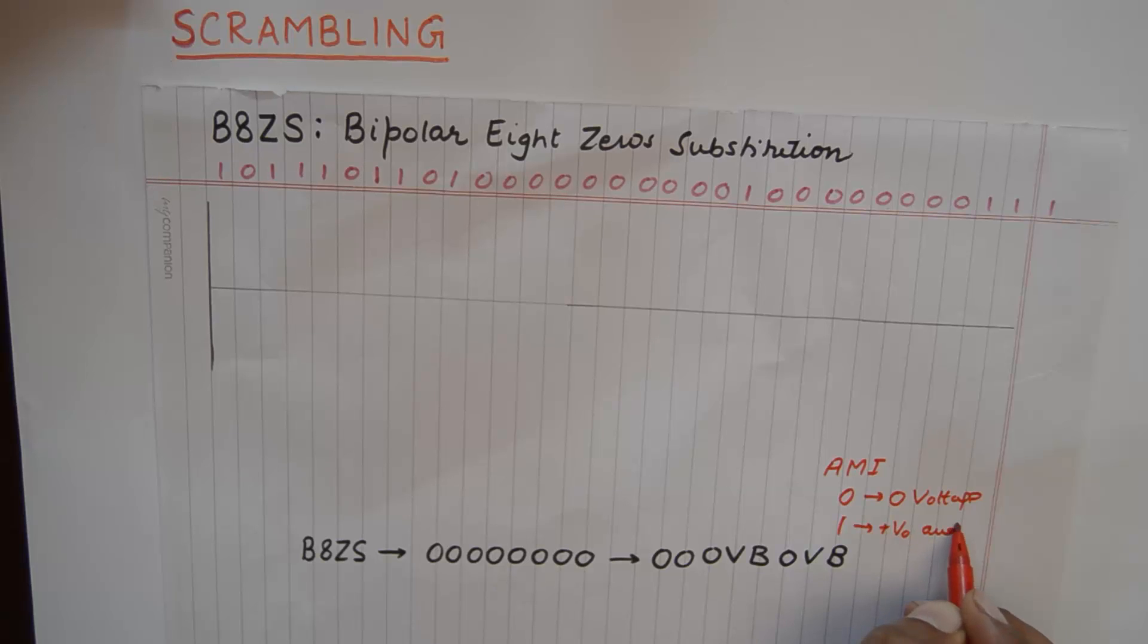Every alternate one will change its polarity from plus V0 to minus V0, so it is important to understand AMI thoroughly before you attempt to encode B8ZS or HDB3.